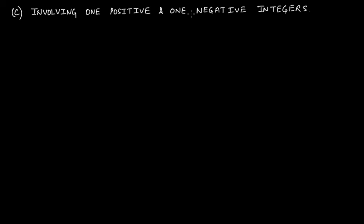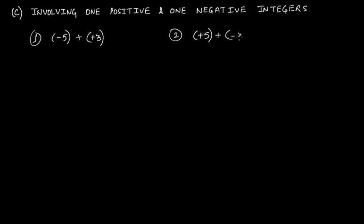The third condition involves one positive and one negative integer. Let me explain with two examples simultaneously. The first is minus 5 plus plus 3, where 5 is negative and 3 is positive. The second is plus 5 plus minus 3. We have just interchanged the position of the plus and minus signs — in the first case minus was with 5, but in the second case minus is with 3.